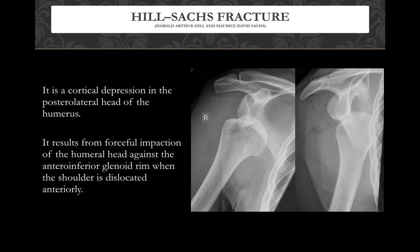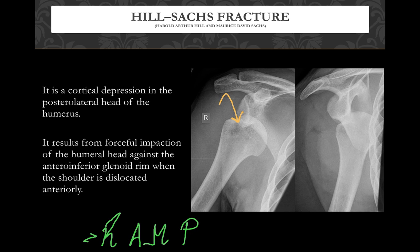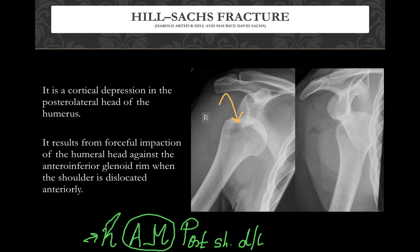The Hill-Sachs lesion involves the posterolateral aspect of the humeral head, with a depression seen in anterior shoulder dislocation. Remember the mnemonic RAM: Reverse Anterior-Medial — in anterior dislocation, the posterolateral shoulder is affected, and in posterior dislocation, the anteromedial part is affected.